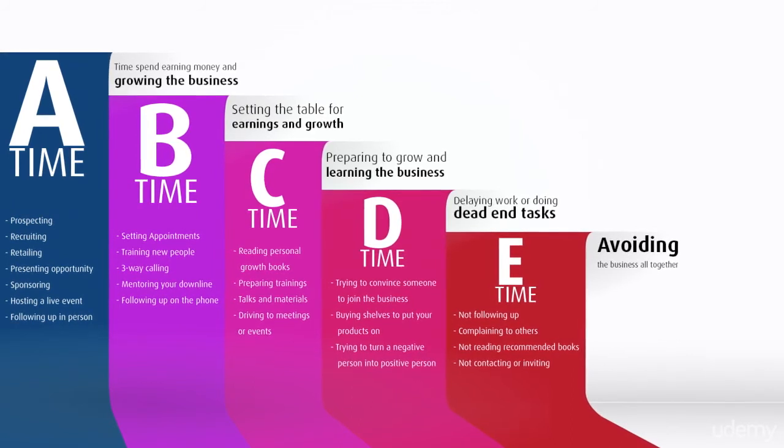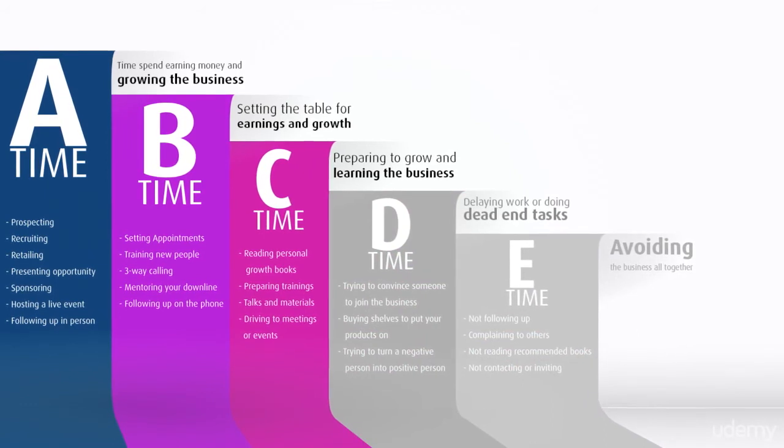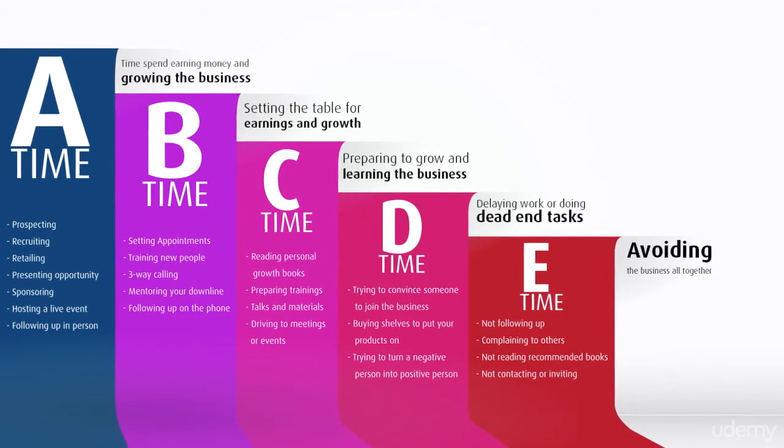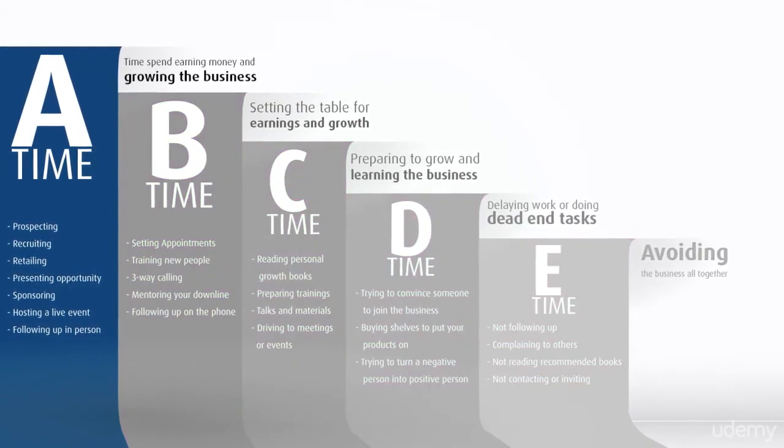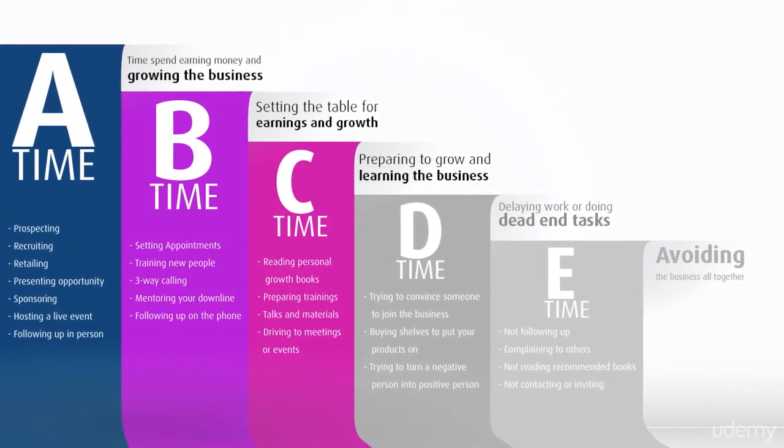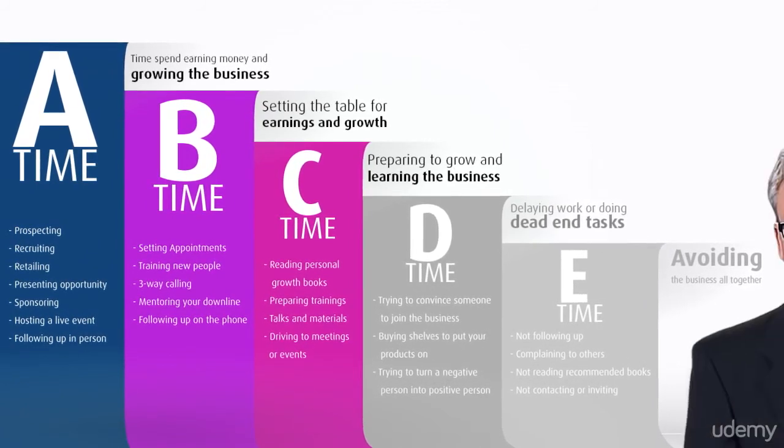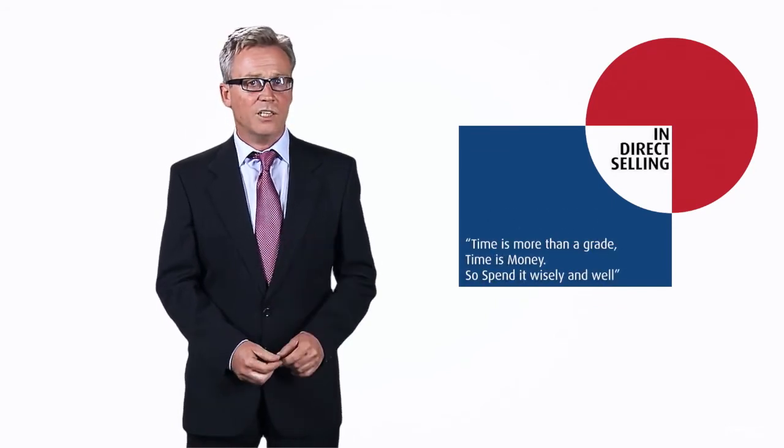As with any grading system, your goal is to bring the B and C grades up to an A. Take a look at the categories again. Where are you spending your time? Is most of your time A time? Are you just spinning your wheels in B and C time? Or are you doing your best to move those tasks into the A category? In direct selling, time is more than a grade. Time is money. So spend it wisely and well.